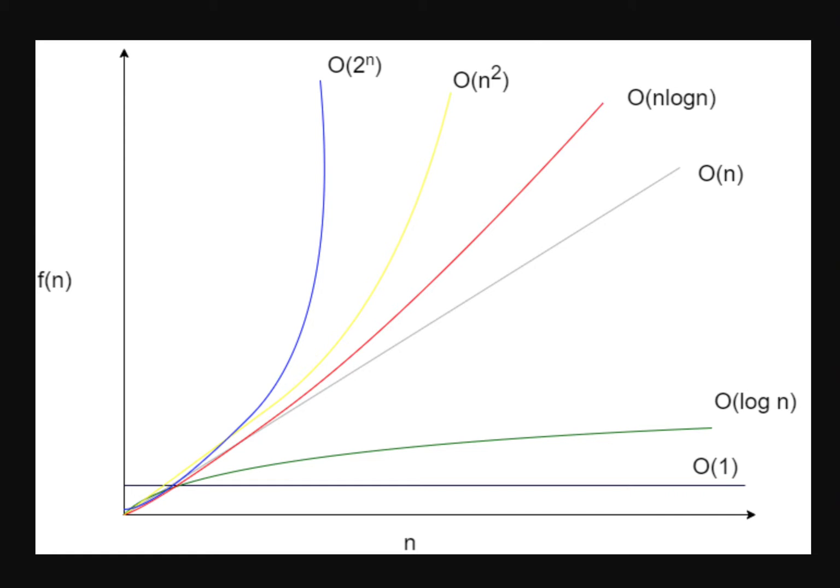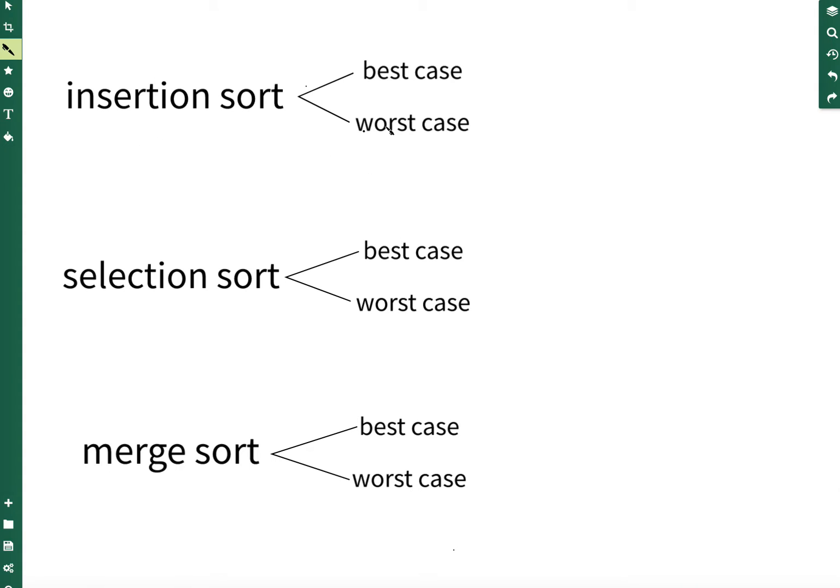So considering the algorithms, insertion's best case is n if it's sorted. Worst case, n squared if it's very unsorted. Selection is the worst of the bunch because the best case is n squared, the worst case is n squared. It always has to go through the nested for loop. Merge has the same best and worst case, and it's n times log n.